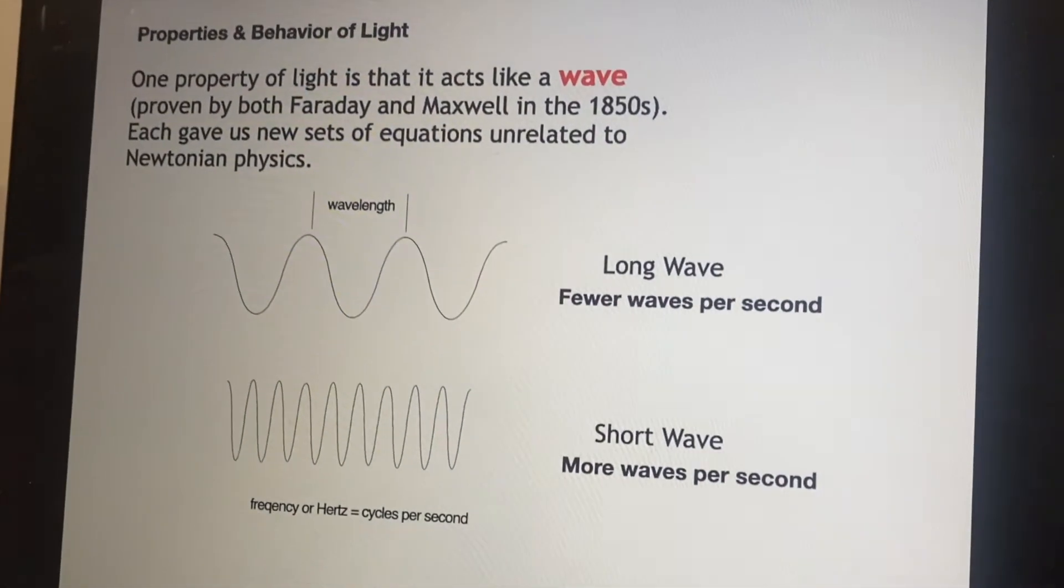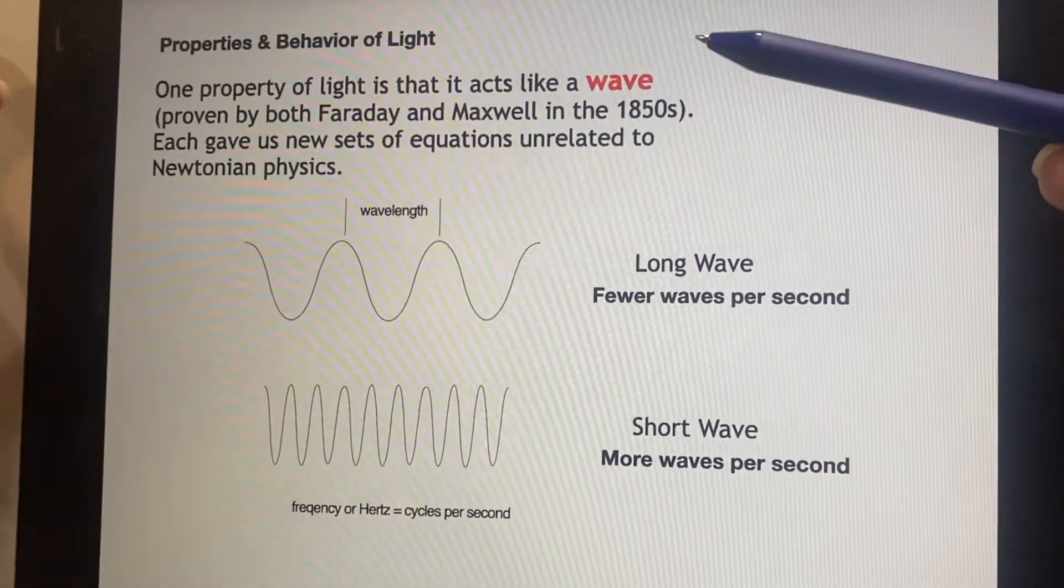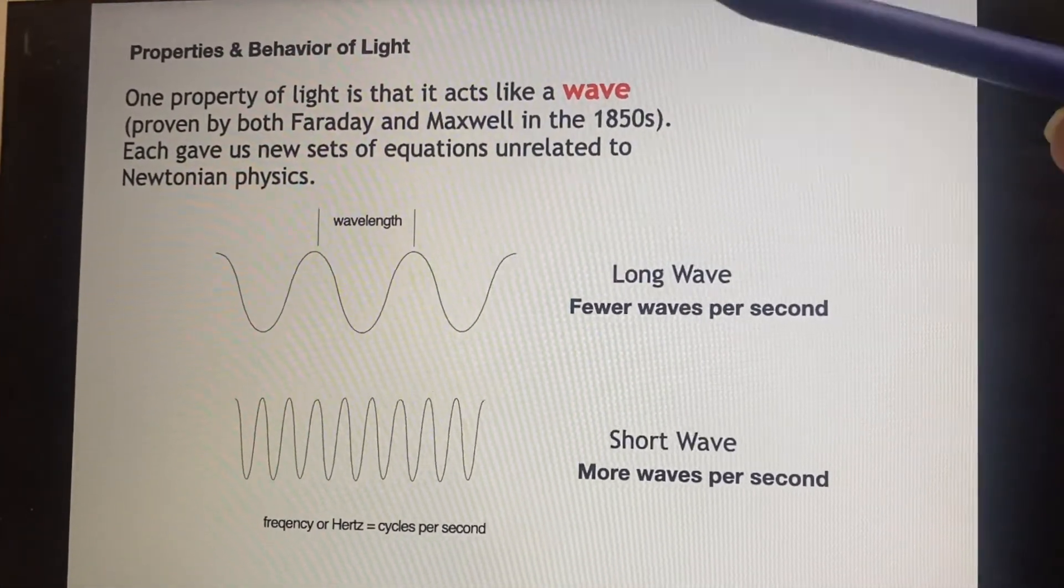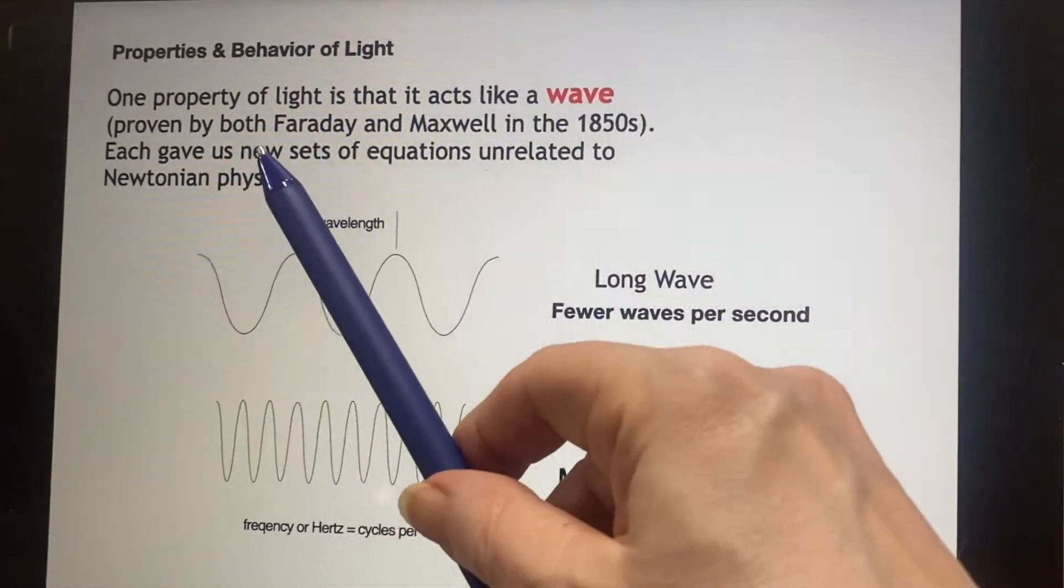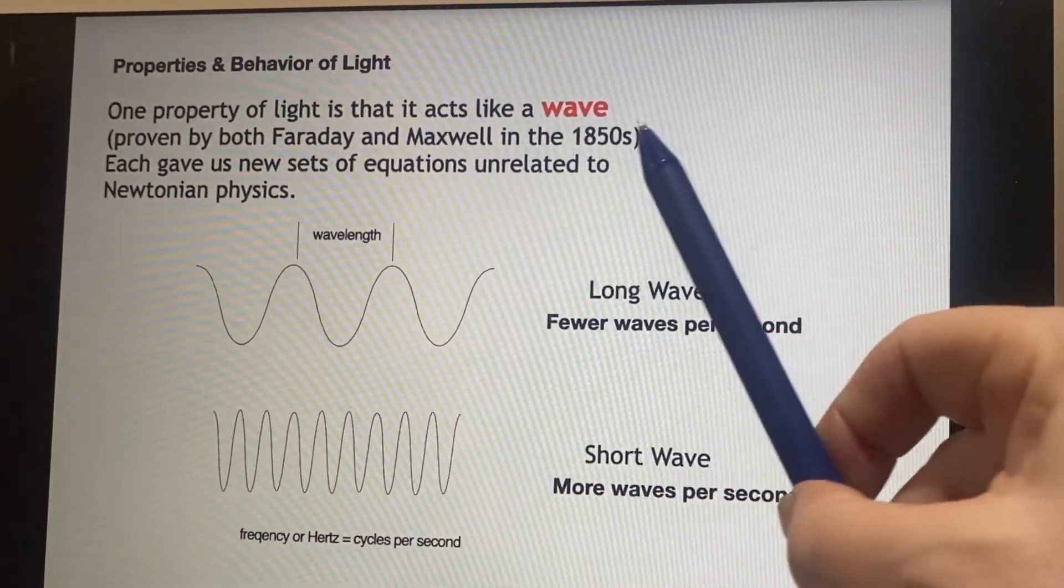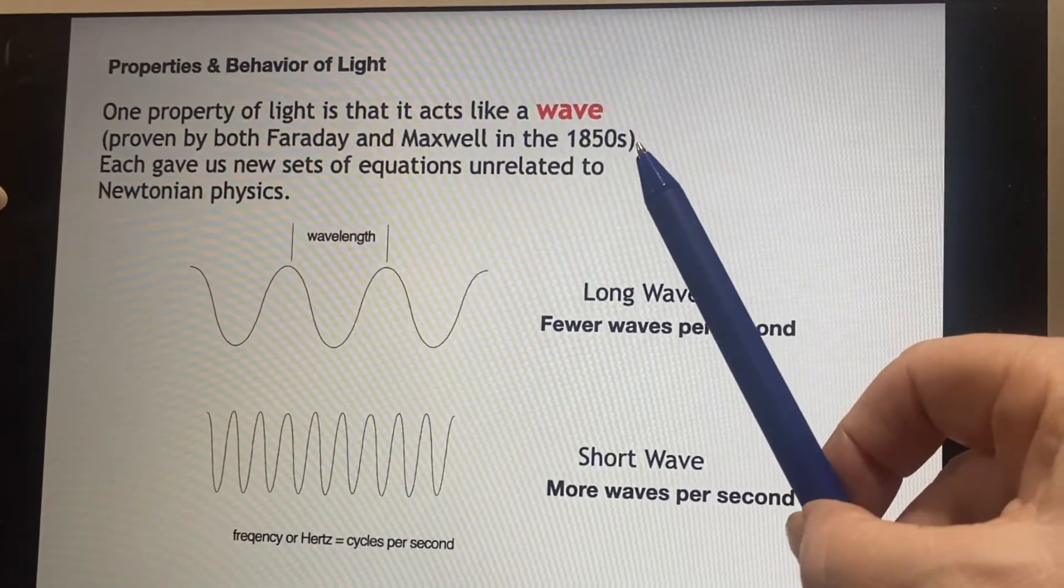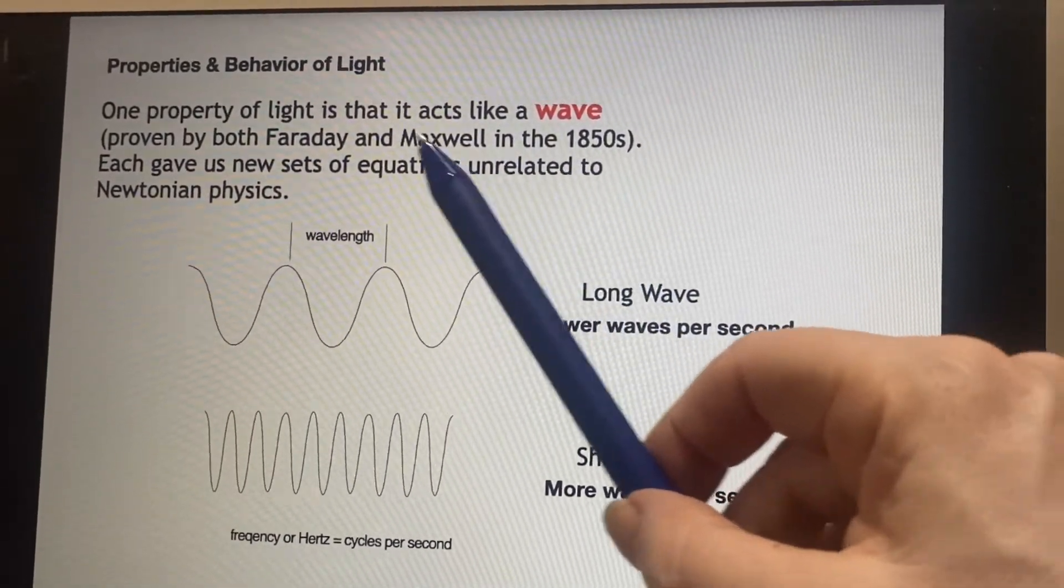We can start talking about the properties of light. Generally, we think of light and it acts like a wave. And we can see here that parenthetically, I said that this was proven by both Faraday and Maxwell in the 1850s. I mean, that's a while ago, right?